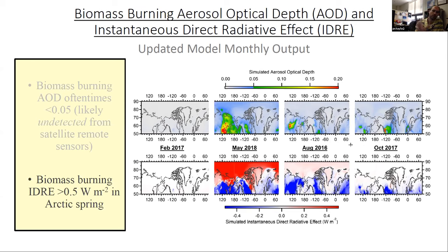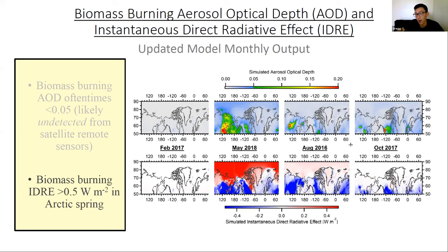Question on representativeness: Are February, May, August, and October representative months or anomalous ones? The answer is uncertain — there are people looking at how representative these emissions and meteorological features are, but the data hasn't been fully reviewed. What can be said is that there is a pervasive effect of biomass burning aerosol in the arctic, and that's not only a regional feature — it's seen globally — but no quantitative numbers can be assigned to representativeness at this time.